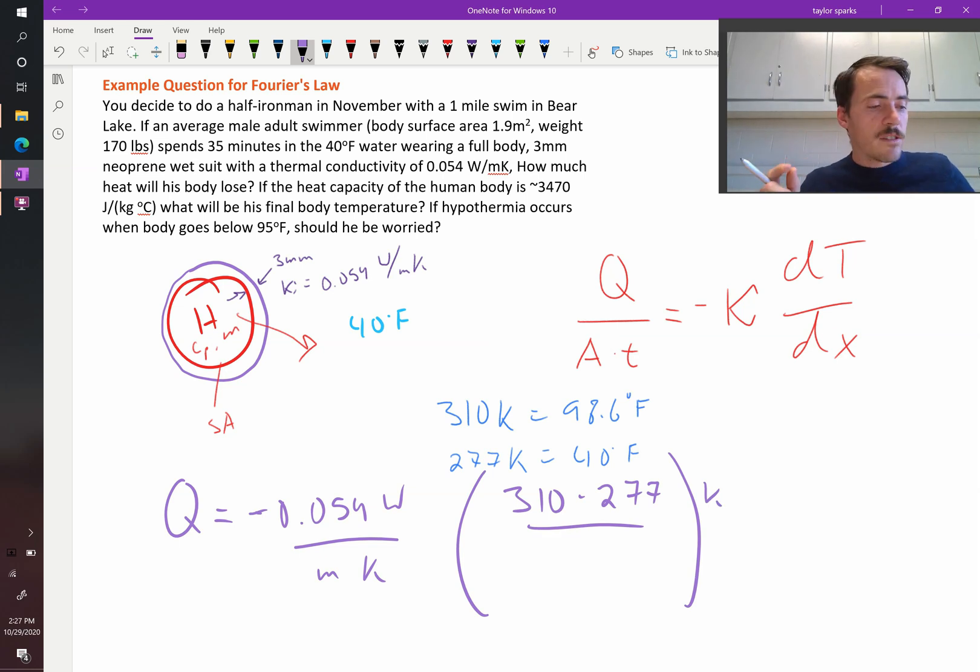Divided by the thickness of the wetsuit, that's going to be 3e to the negative 3 meters. So it's going to be 0 minus 3e to the negative 3 meters. So that will tell us the watts per meter squared lost. So when I plug these into my calculators, I find that's equal to 594 watts per meter squared. And this is equal to joules per meter squared per second.